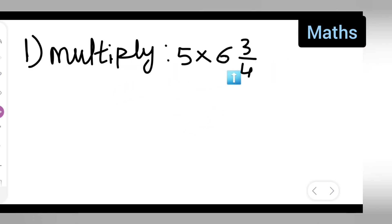First, take down the question: multiply 5 multiplied by 6 and 3 upon 4. So first you'll write down 5 multiplied by 6 and 3 raised to power of 4. Basically this is equal to 5 multiplied by...